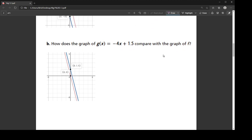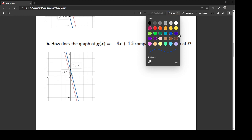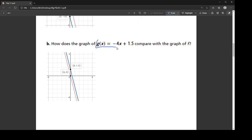All right, so then, remember f of x was this red one, which is negative 4x. So now for g of x, they changed it to where they're adding 1.5 at the end of it. And if you look, here's 1.5, so the graph was translated up by 1.5.